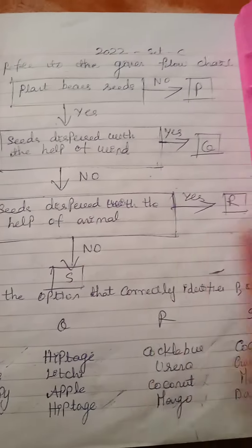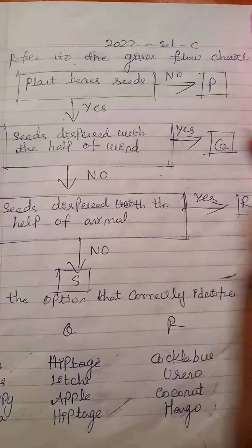Refer to the given flow chart and select the option that correctly identifies P, Q, R and S.